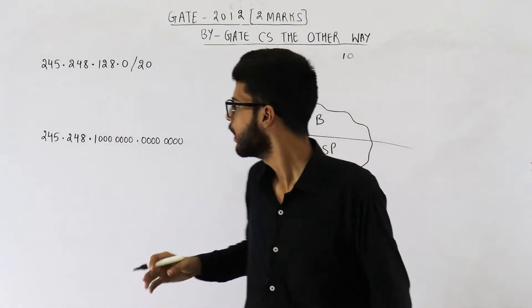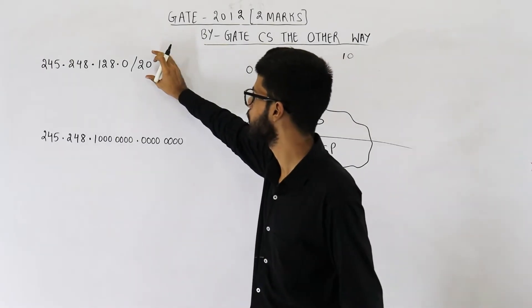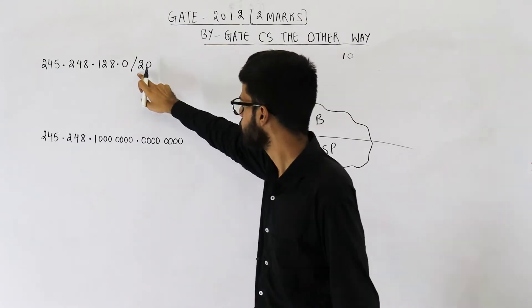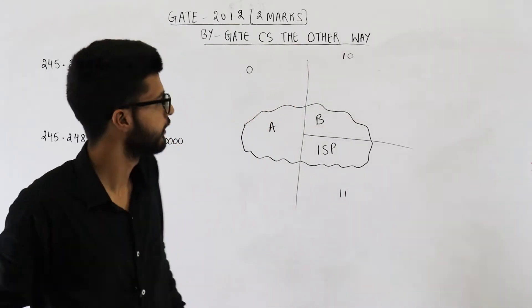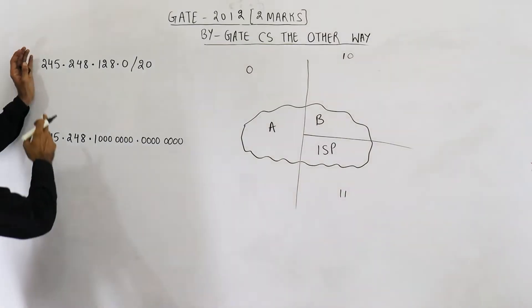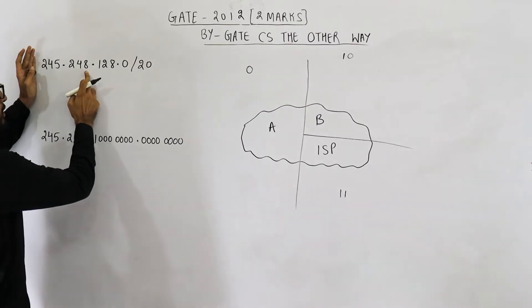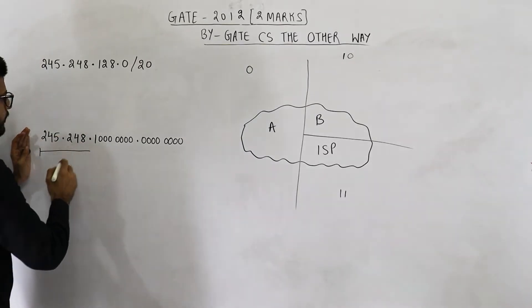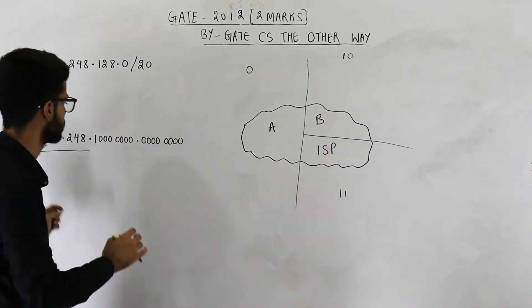Before that, let us find how many total IP addresses are there in this block. This is the block or chunk that the ISP has — 245.248.128.0/20. Slash 20 means the first 20 bits are in the network ID. The first octet is 8 bits, first two octets is 16 bits. To make 20, you need four more bits.